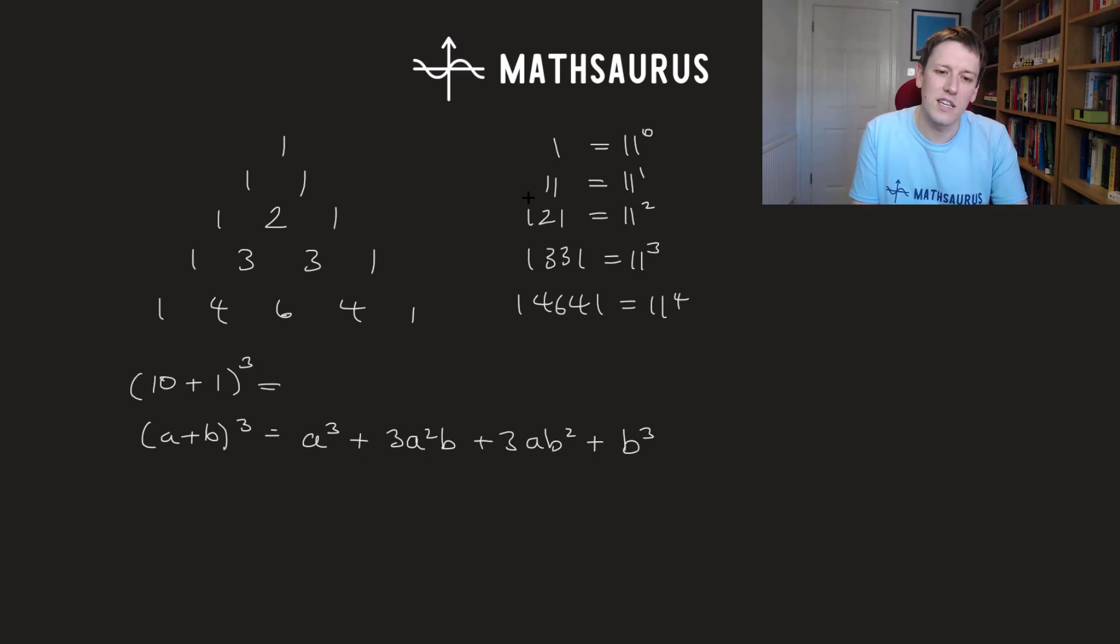And if you substitute in a equals 10 and b equals 1, well look, you just get 10 cubed plus 3 times 10 squared times 1, but we don't need to put the ones in. So b is 1, all the b terms are going to drop out here, and I get plus 3 times 10 and then plus 1. Well, this is just exactly how we write things out as place value.